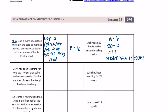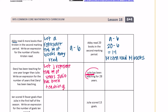Daryl has been teaching for one year longer than Julie. Write an expression for the number of years Daryl has been teaching. Let J represent the number of years Julie has been teaching. If Daryl has been teaching one year longer than Julie, that would be J plus 1. If Julie has been teaching for 28 years, then 28 plus 1 equals 29, so Daryl has been teaching for 29 years.